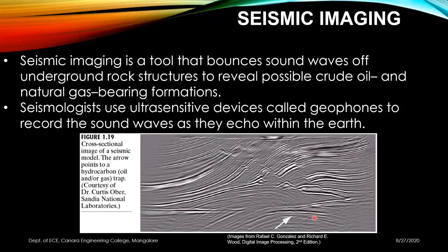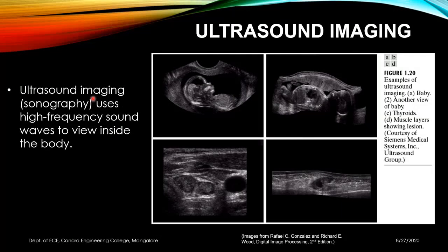One of the most popular medical imaging techniques is ultrasound. It can show a baby in the womb, study fetal development, detect defects, and examine the thyroid or muscle layers for lesions. Ultrasound imaging uses high-frequency sound waves — the system sends waves, senses reflected waves via sensors, and creates an image. It can be viewed in real time, allowing observation of blood flow through vessels, heartbeats, or fetal movement.